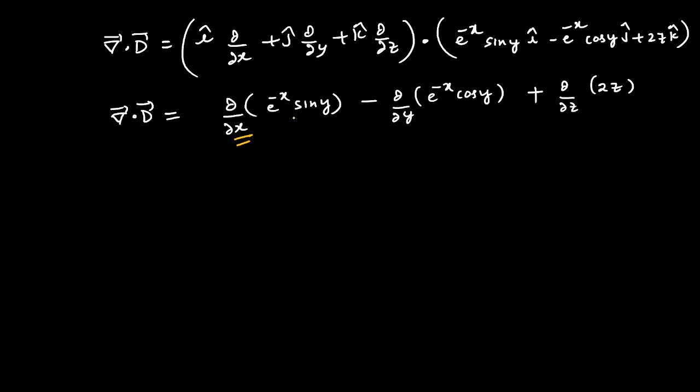Using that, divergence of D turns out to be: sin y is treated constant, so e^-x differentiation is e^-x times minus one. Then we have differentiation with respect to y, so x is constant. I'll take e^-x as it is, differentiation of cos y is minus sin y.